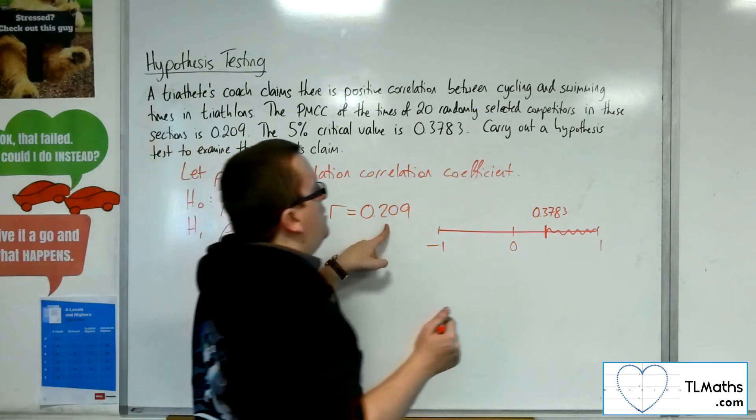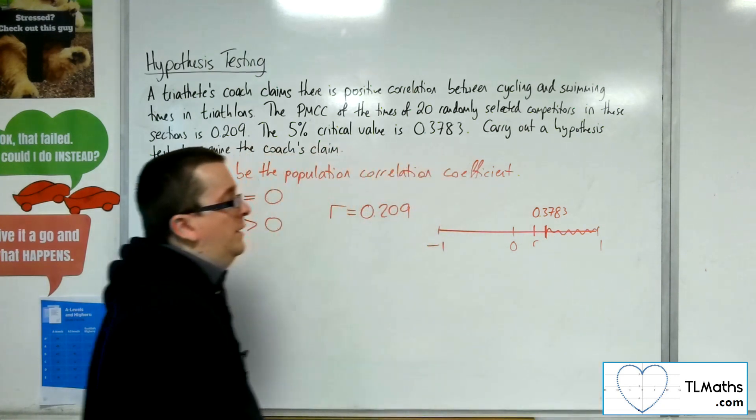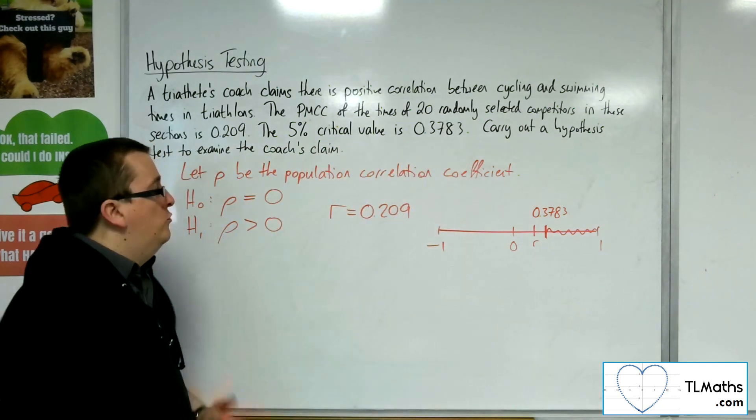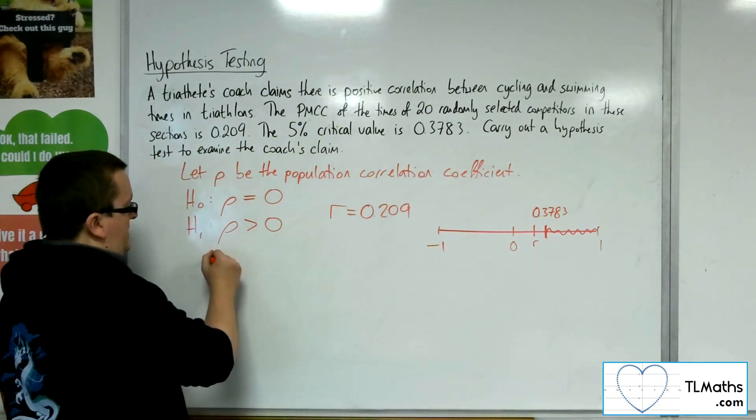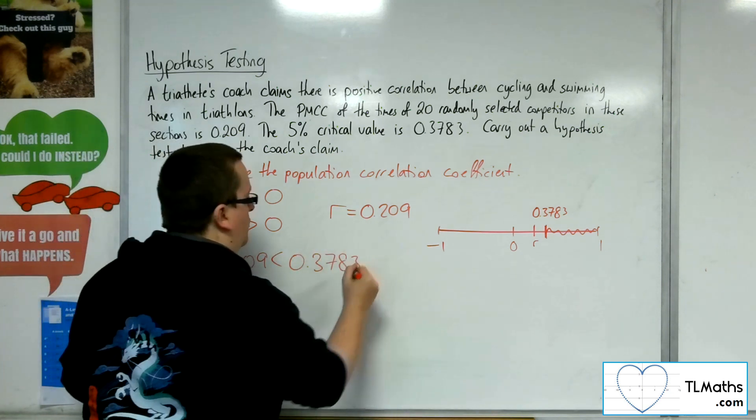The 0.209 is appearing somewhere there. So r is not in the critical region. So we must write down that 0.209 is less than 0.3783.